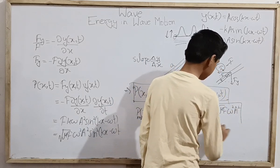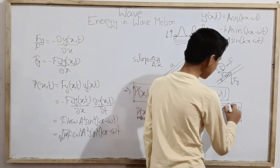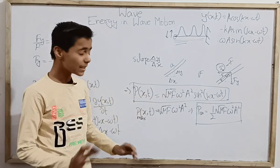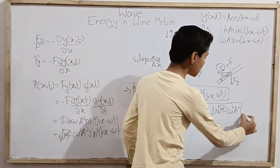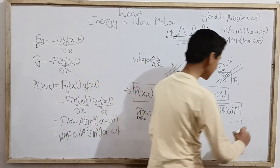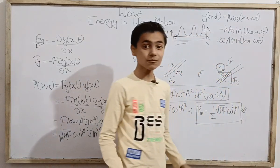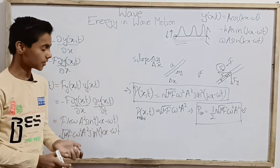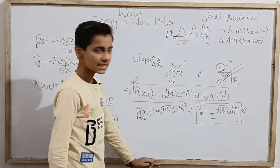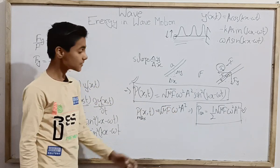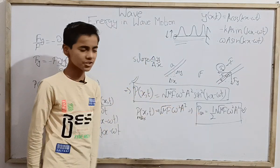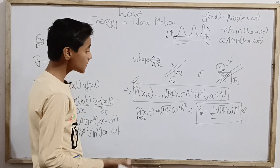This is our average power formula. When you are solving numericals on this topic, it will mostly be based on average power rather than instantaneous power, so the average power equation is the more important one to remember. However, if you are studying for knowledge, both equations are equally important. If you are doing it for competitions, the average power formula is most beneficial in solving numericals in most cases.